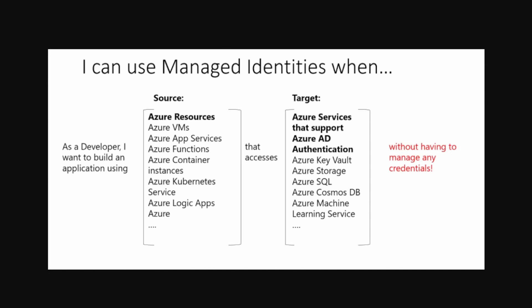Before going forward, let me show this image from Microsoft documentation — when I initially learned managed identities, this helped me a lot. As you can see, we have two types of resources: source resources like virtual machines, app services, and function apps; and target resources like Key Vaults, Storage, SQL, and Cosmos DB. As a developer, I want to build an application using these source resources that accesses these targets without having to manage any credentials — and this is the problem that managed identities solve.